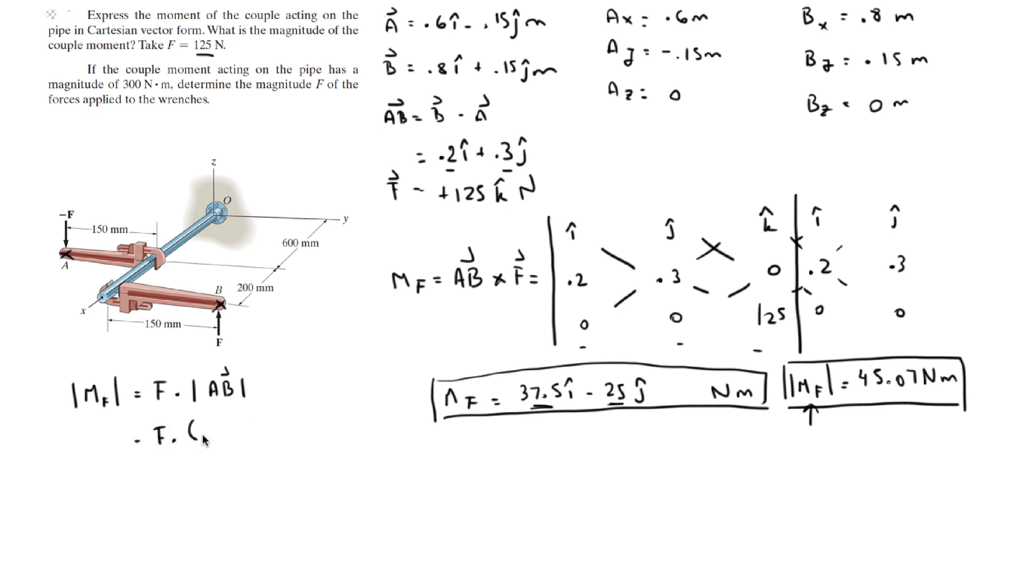So F times 0.36 is equal to the moment which is given, 300 newton meters. So you solve for F, and you're going to get that F is equal to 833 newtons.